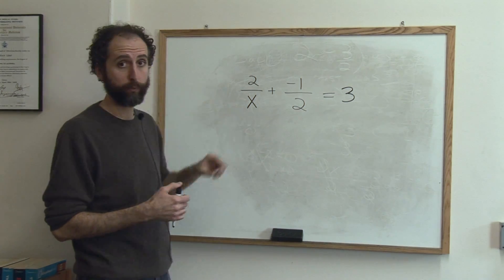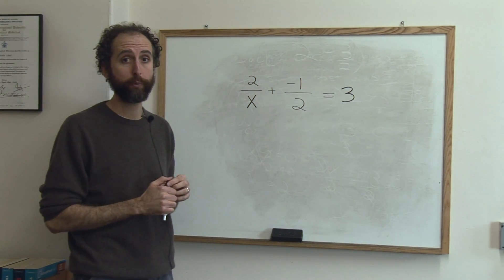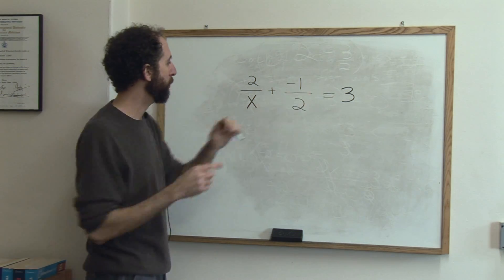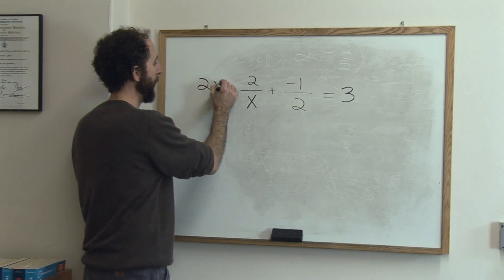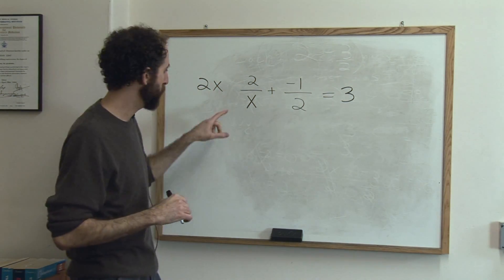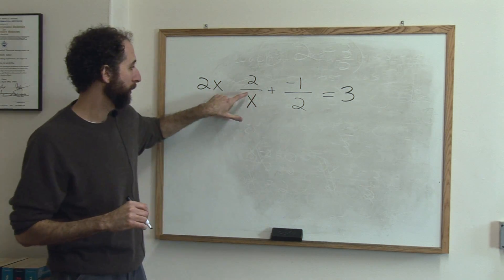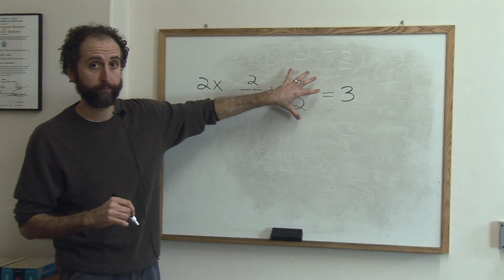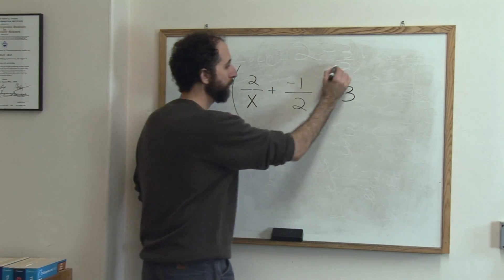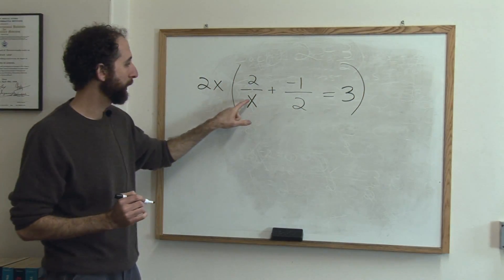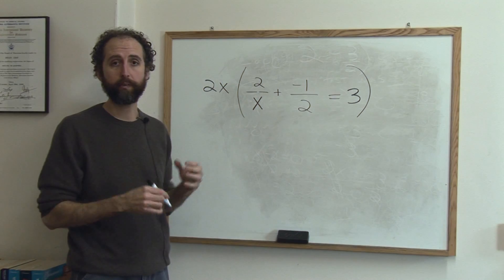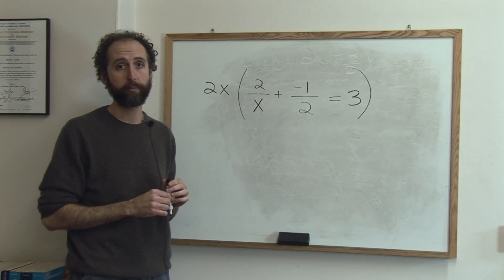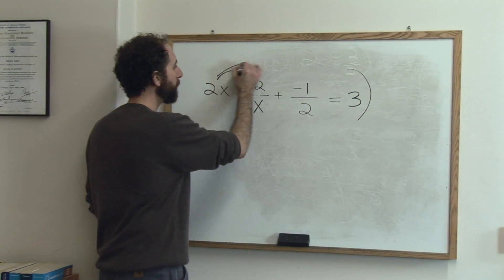When we say solve, we want to know what x equals. Here's what we're going to do: we're going to multiply the entire equation by 2x. 2x would be basically the lowest common denominator of this fraction and that fraction. When we multiply the entire equation by 2x, we're going to eliminate these denominators and make it a simple algebra equation.